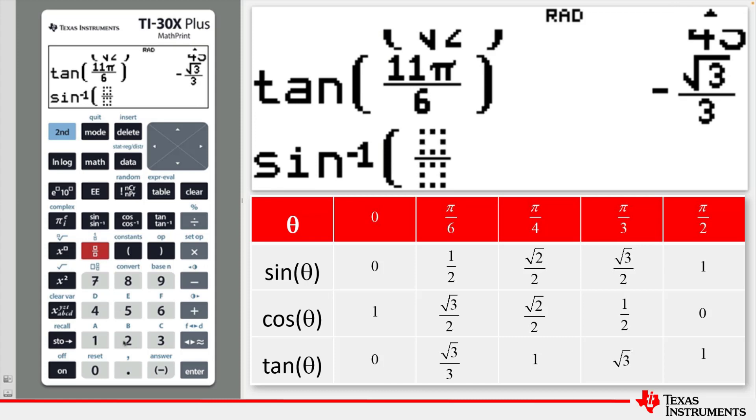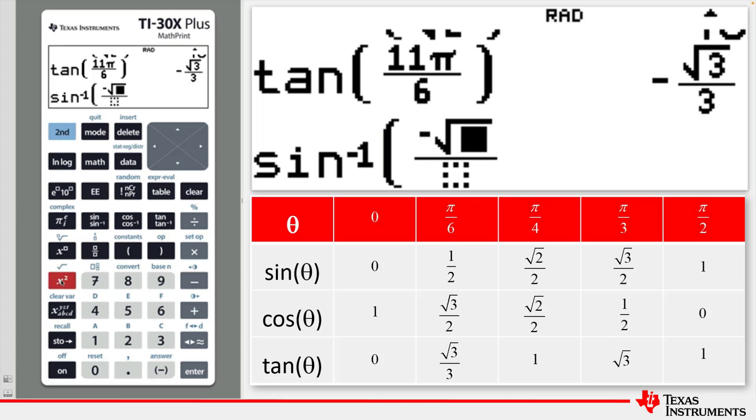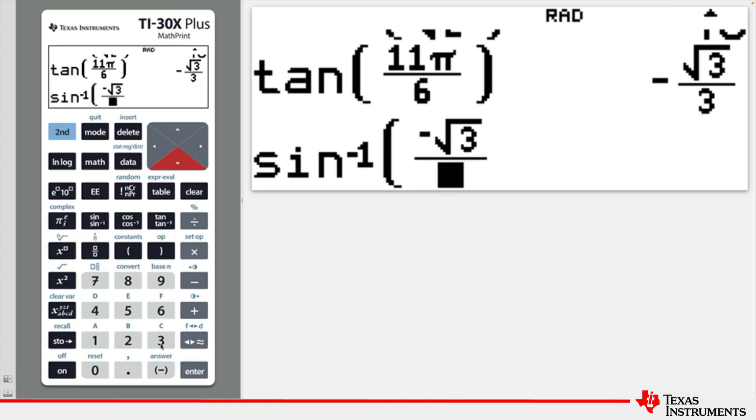And we're going to use a fraction and we'll choose the negative symbol and then the square root of 3 over 2. And then close the brackets.